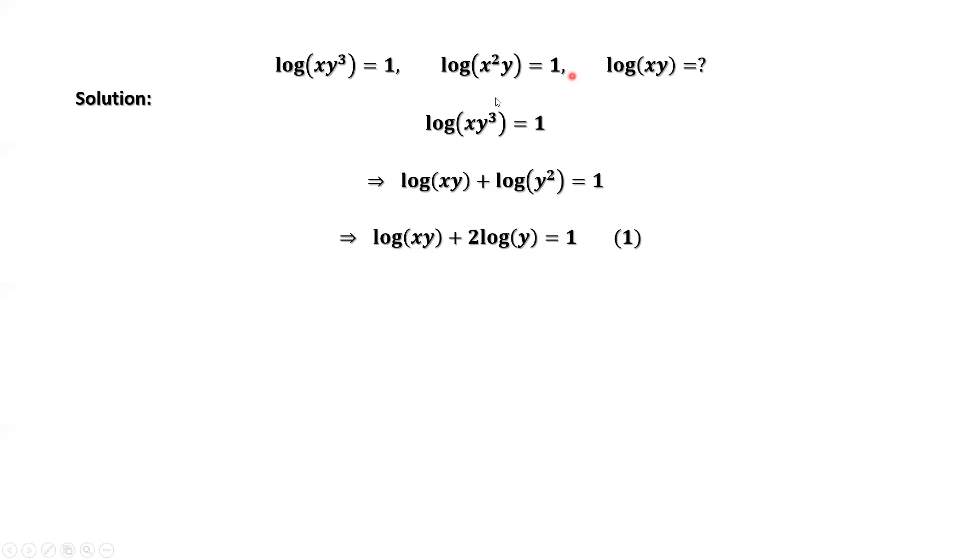From the second given condition, log of x squared times y equals 1. Similarly, we can rewrite the left-hand side as the sum of two logs, which is log of x times y plus log of x. This implies log of x times y plus log of x equals 1.